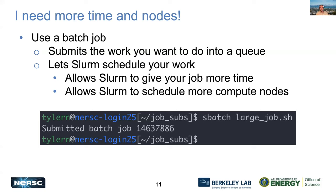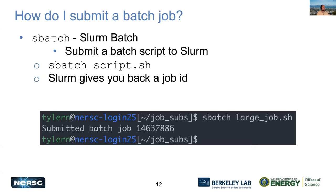If you need more than four hours or more than a couple nodes, you'll want to use a batch script. This allows you to write a script with your work and submit it into a queue, then let Slurm handle all the scheduling — giving your job more time and more resources. It's as simple as running sbatch on your script. The sbatch command submits your script to the Slurm scheduler, and when you run it, you get back a job ID you can use to track your job.